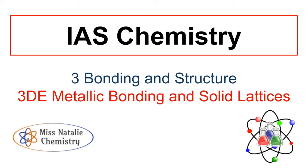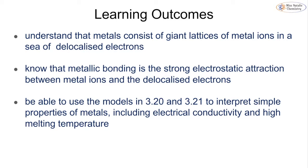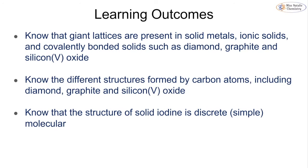In this video we're going to be looking at topics 3D and 3E, which is metallic bonding and solid lattices. This is part of the IAS chemistry course from Edexcel. We're going to be looking at metallic bonding in terms of structure, the actual bonding and electrostatic attractions, and we will then use this information to tell us about the properties of metals. We will then look at giant lattices — in particular metal lattices, ionic lattices, and some specific covalent lattices — and then look at the different structures that can be formed by carbon as well as iodine.